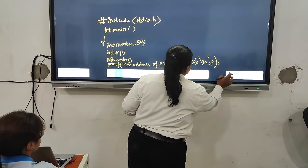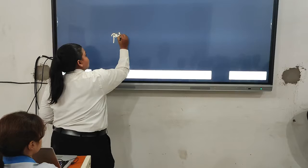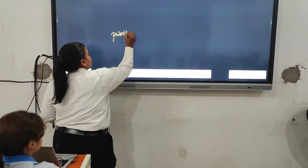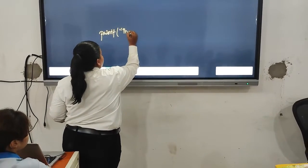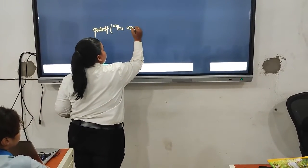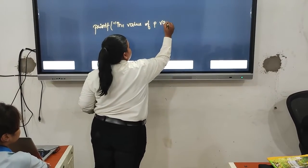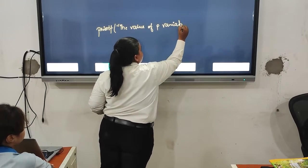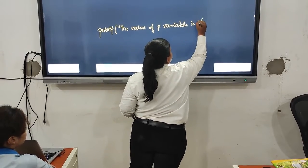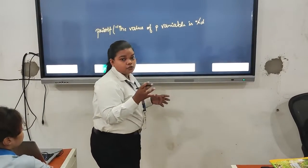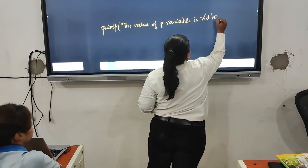In another line, we will write printf. We want to print the value also, so we will write the code for value. The value of p variable is, here we will use %d. Because we want to get the value, so it will be integer kind of. So we will write here %d slash n for the new line.